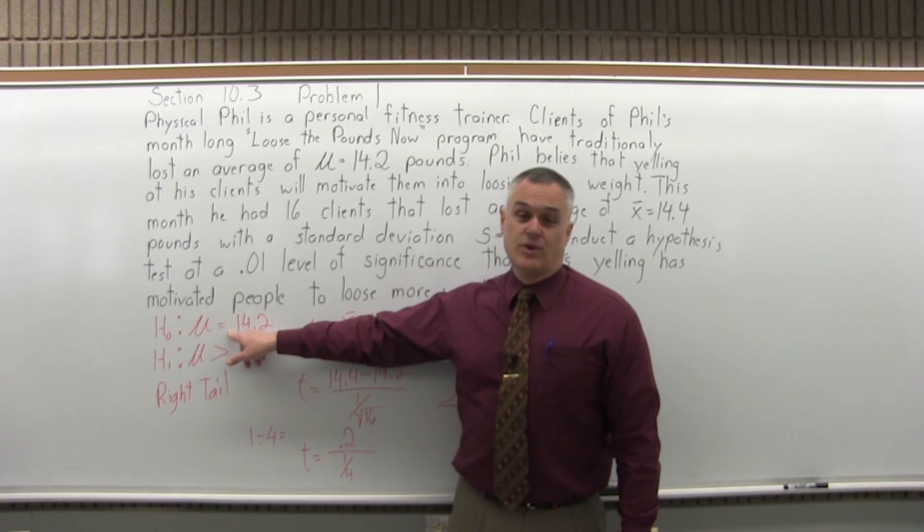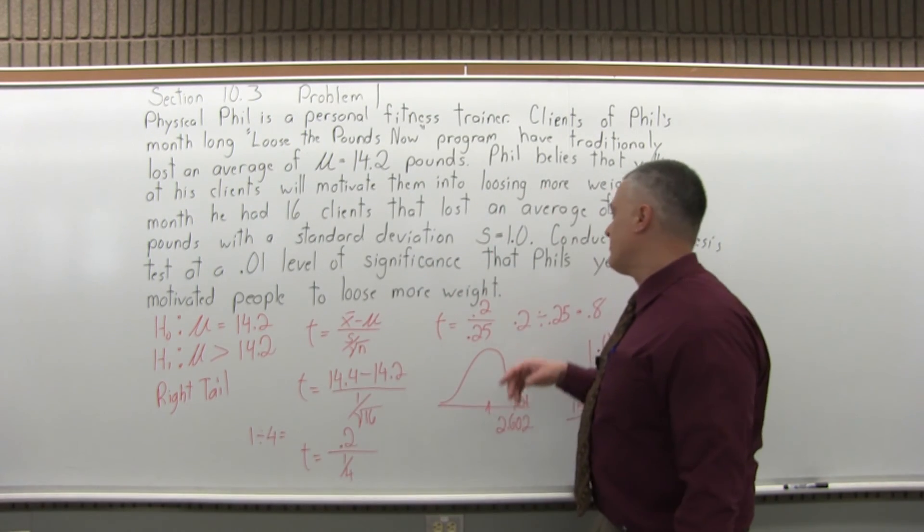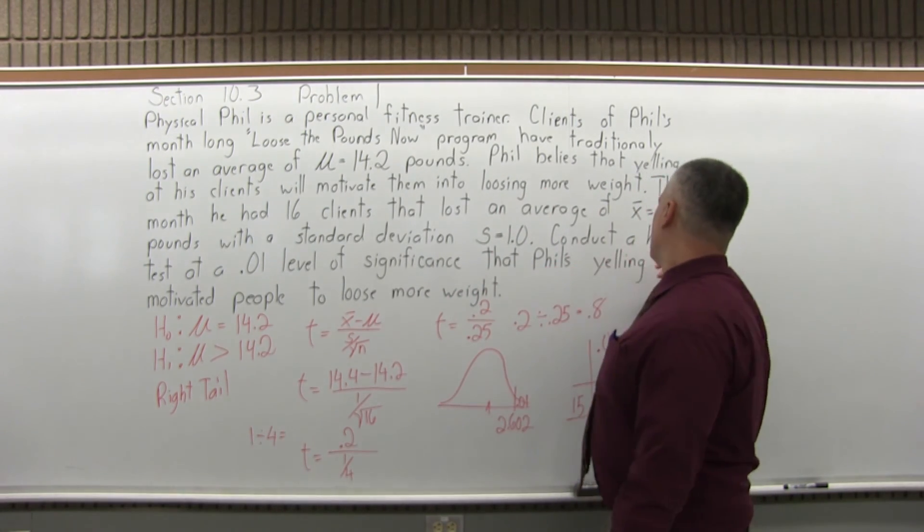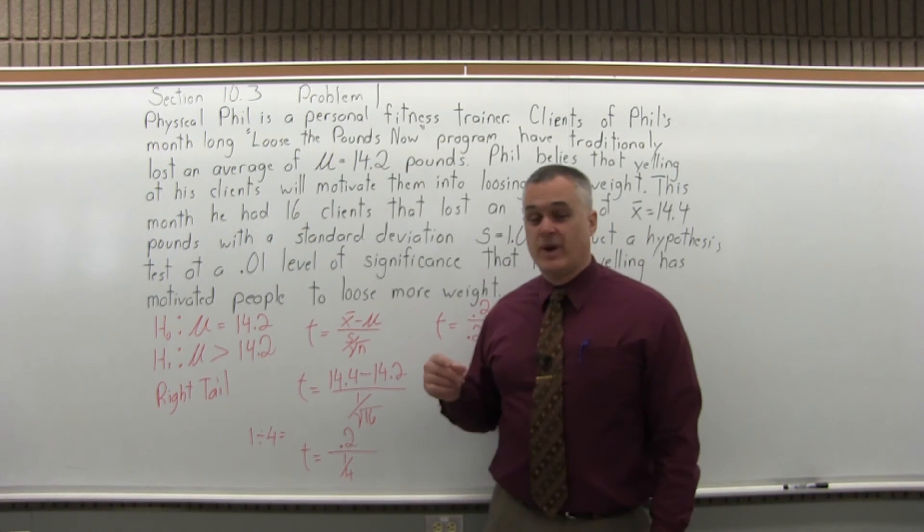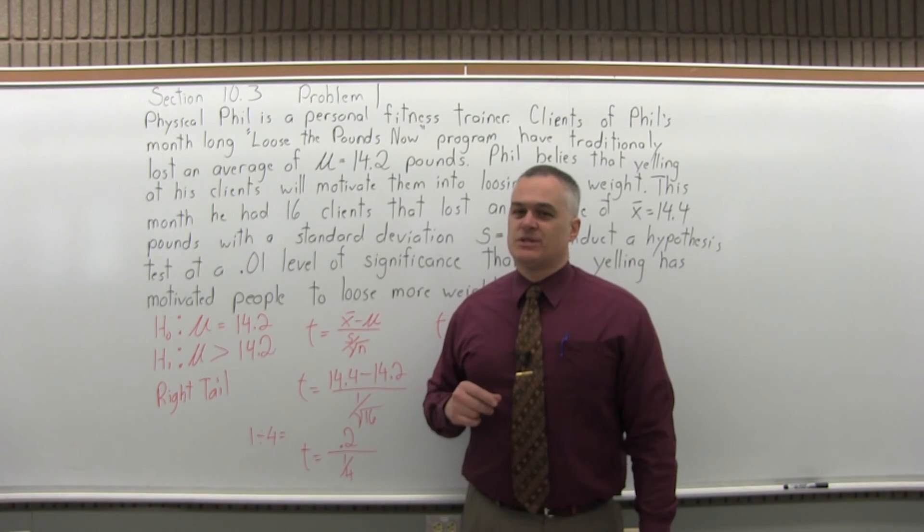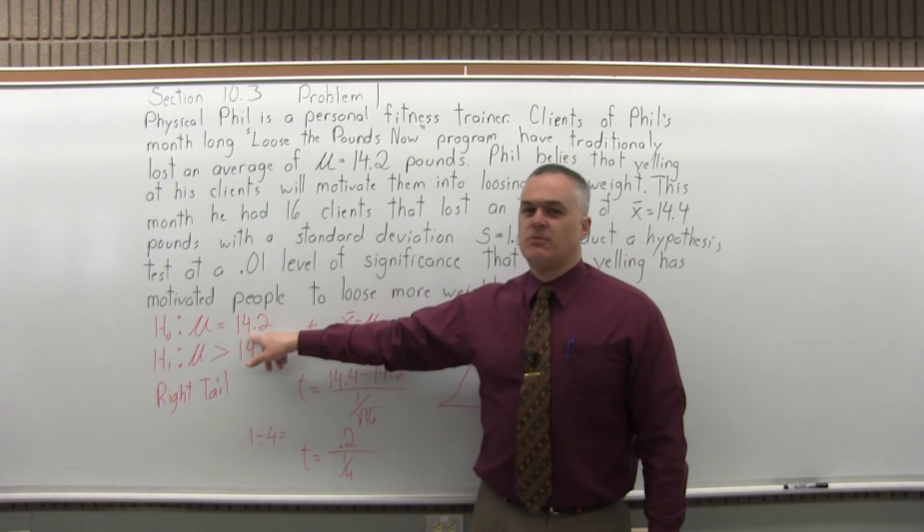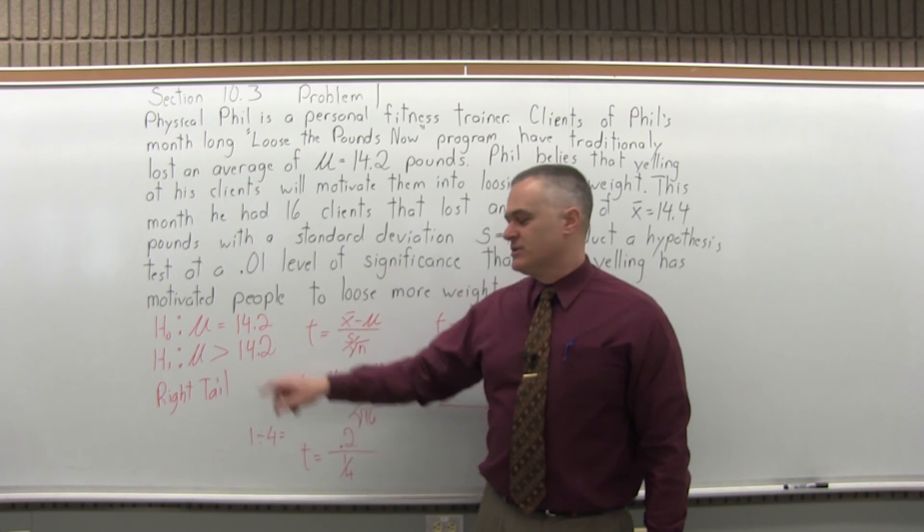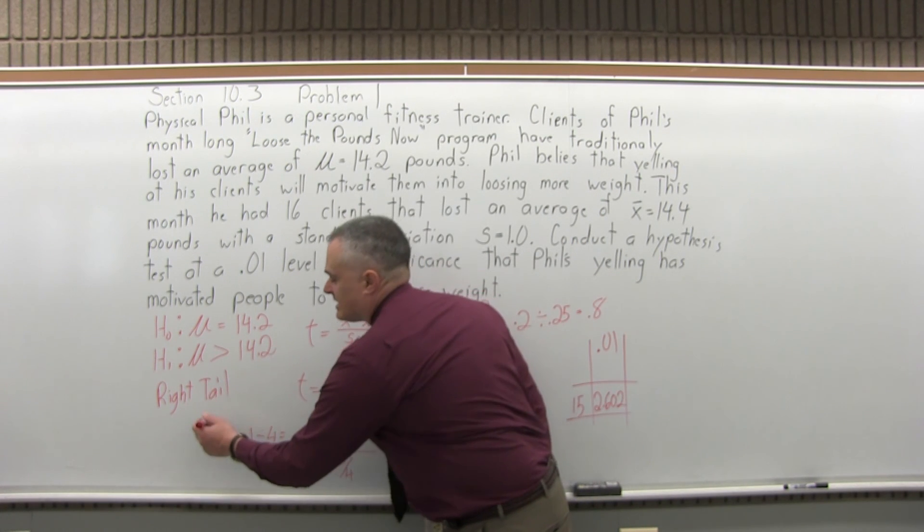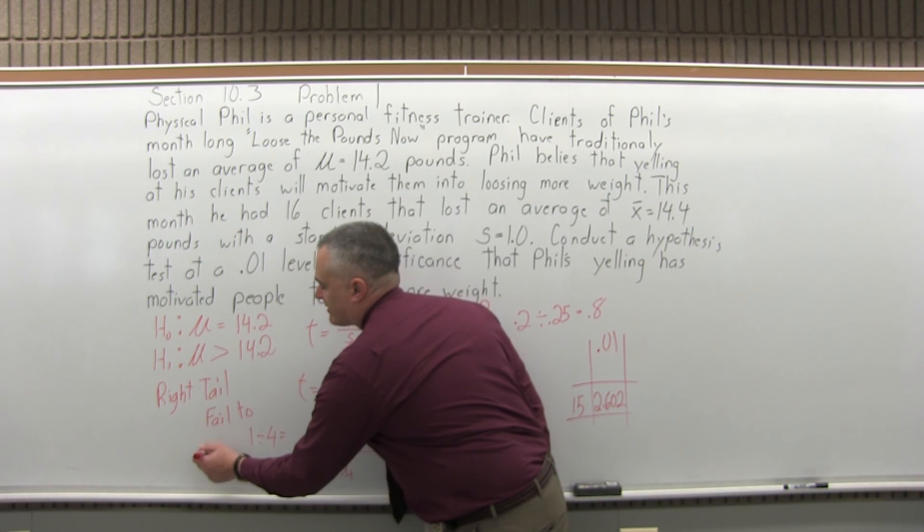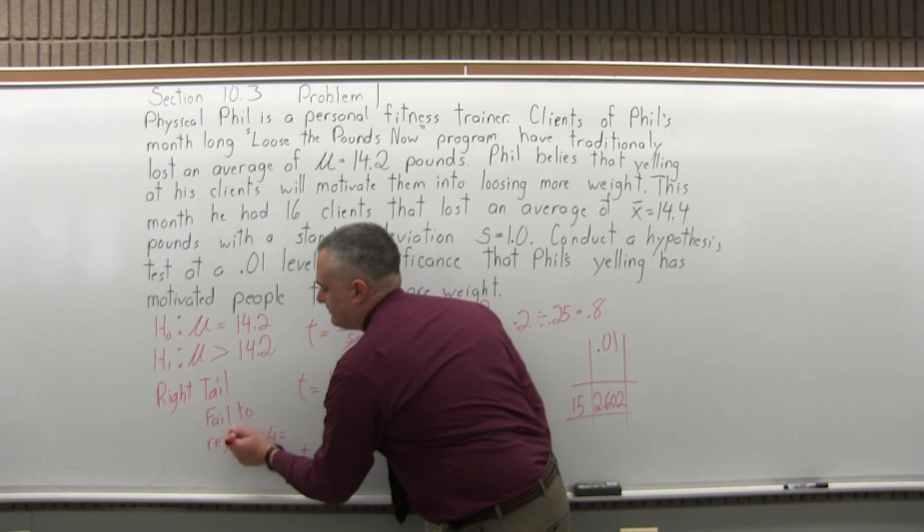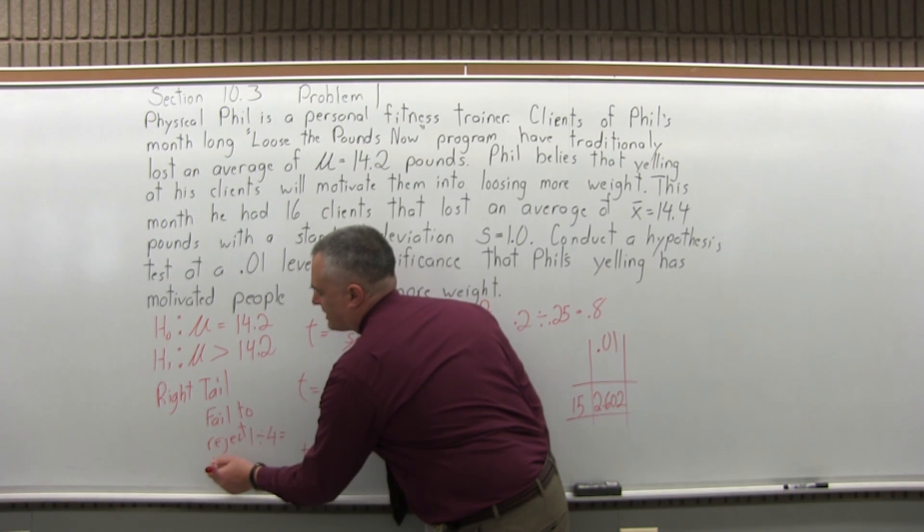Most likely, the average is still 14.2. This particular sample of clients did go to 14.4. They lost a little bit more weight. Coincidental, it was most likely not due to Phil's yelling. The population average is still most likely 14.2. So your conclusion, step six, state your conclusion. Your conclusion would be fail to reject the null hypothesis.